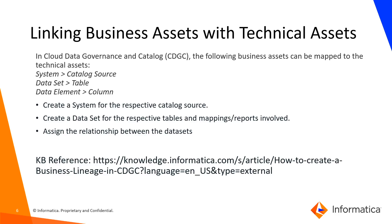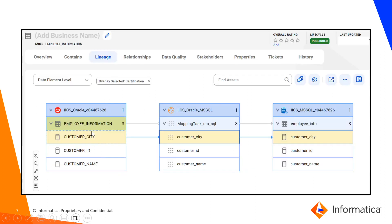In Cloud Data Governance and Catalog, linking business data assets with technical assets creates a business lineage. We have to map business assets to technical lineage assets: a system is mapped to a catalog source, a dataset is mapped to a table, and a data element is mapped to a column. For example, we are viewing the technical lineage for an employee information Oracle table, which goes through an IICS mapping and the target is the employee info table from the SQL Server resource.